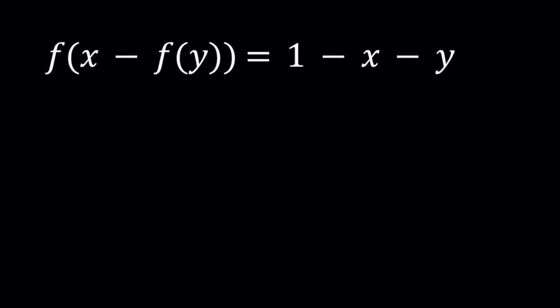I'll be presenting two methods and let's start with the first one. For my first method I'm going to replace y with 0 on both sides. This gives us f(x - f(0)) = 1 - x. Because y is 0 we just have 1 - x.